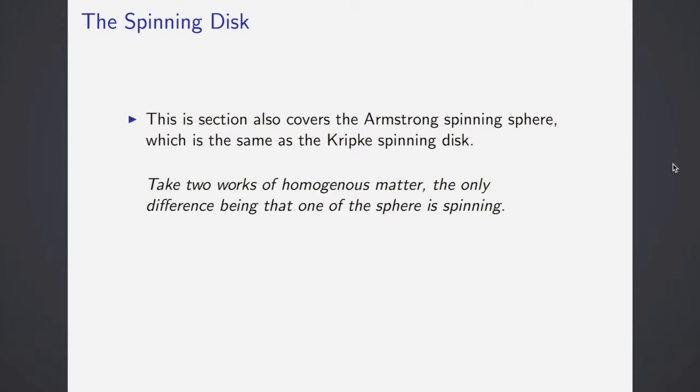There's also this discussion of the spinning disk, and the spinning disk is supposed to show that Humean supervenience doesn't capture everything about the world. Armstrong and Kripke call these two different things and both evidently formulated them independently. Take two worlds of homogenous matter, maybe a sphere, and the only difference between those two worlds is that one of the spheres is spinning. The reason it's a counter-example to Humean supervenience is that there's something that's not spatiotemporal, there's nothing you can point to in space and time that's going to distinguish those two worlds.